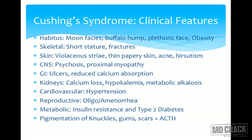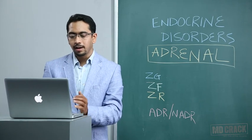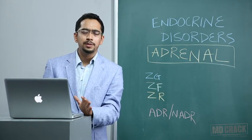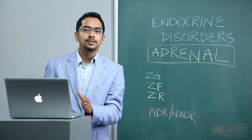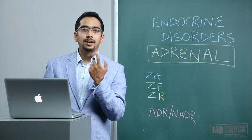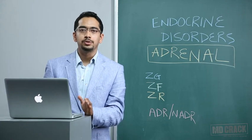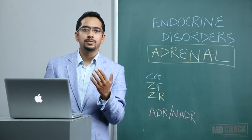Other features of Cushing's syndrome include GI ulcers, reduced calcium absorption, the kidneys may lose calcium, hypokalemia, and metabolic alkalosis. Most patients have associated hypertension, type 2 diabetes, and females can have oligomenorrhea — not menometrorrhagia. Pigmentation over the knuckles, gums, and scars is seen in Cushing's syndrome if it is central in origin, because high ACTH gives rise to pigmentation.